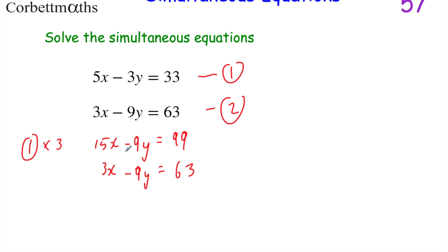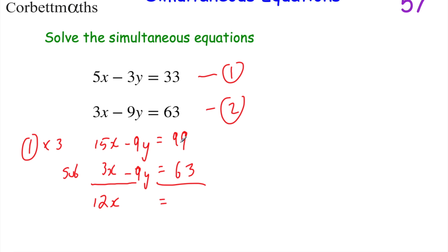Both equations have minus 9y. Minus 9y minus minus 9y equals minus 9y plus 9y, which is 0. So when you've got the same number of a letter in both equations — like 9y and 9y, or minus 3y and minus 3y — you can subtract and they cancel out. Subtracting: 15x − 3x = 12x; minus 9y − (minus 9y) = 0; and 99 − 63 = 36. So 12x = 36. Dividing both sides by 12 gives x = 3.